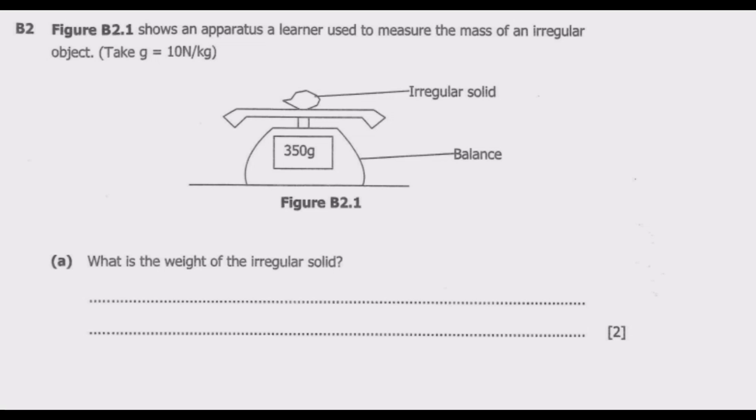Figure B2.1 shows an apparatus a learner used to measure the mass of an irregular object. Taking gravity to be 10 N per kg, what is the weight of the irregular solid?